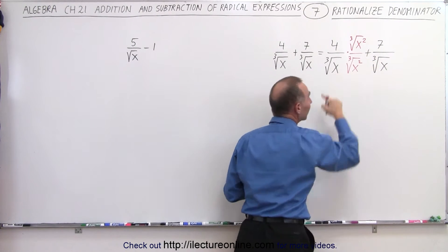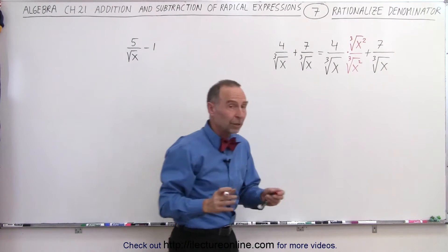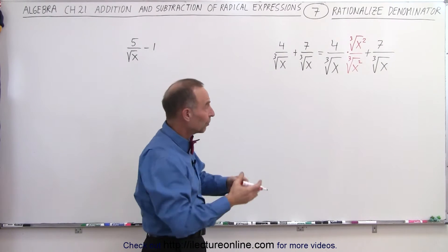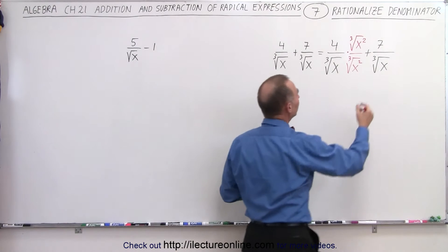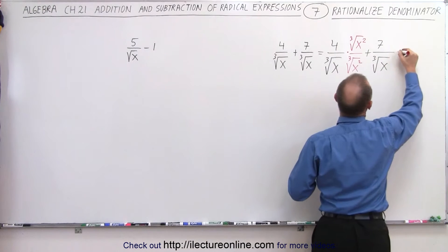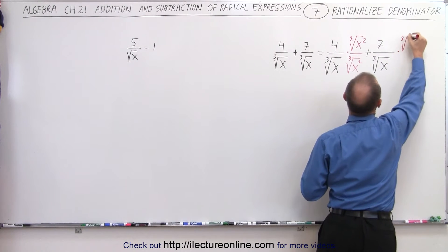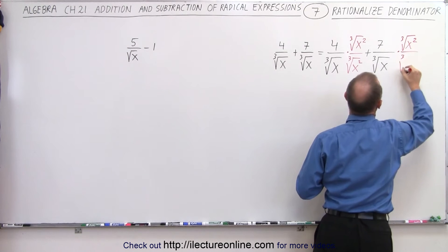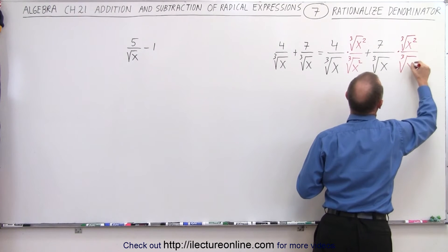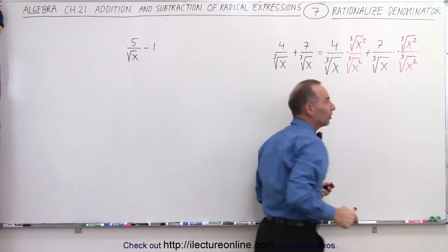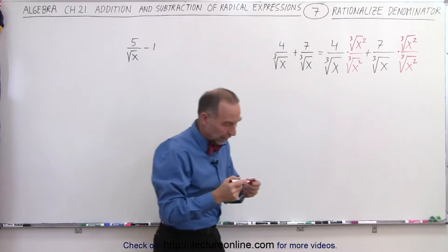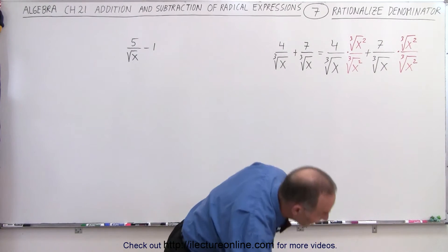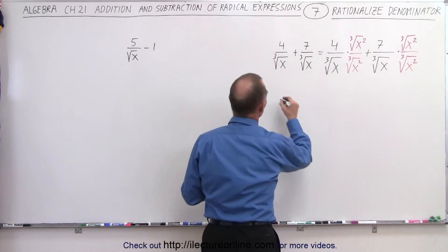Notice when you multiply these together, you end up with the cube root of x cubed, and of course that means you have rationalized the denominator. We're going to do the same over here — the cube root of x squared divided by the cube root of x squared — for the same reason. You can then get a denominator with simply x instead of something underneath a cube root symbol.